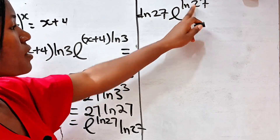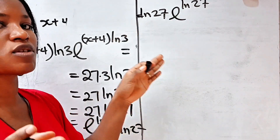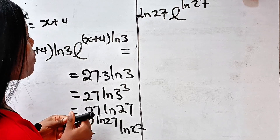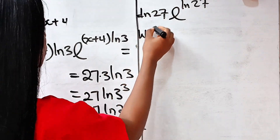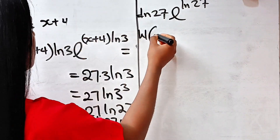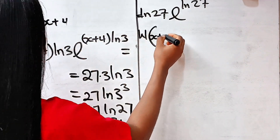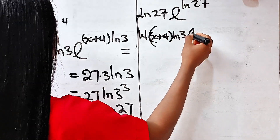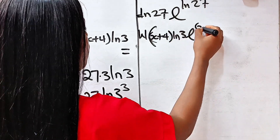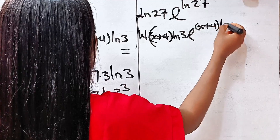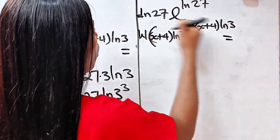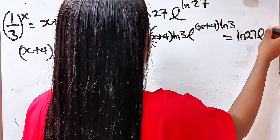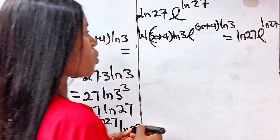Now look at what we have — our power and coefficient are the same on both sides. So it's time to apply the Lambert W function. We have: W[(x + 4)·ln 3 · e^((x+4)·ln 3)] = W[ln 27 · e^(ln 27)].